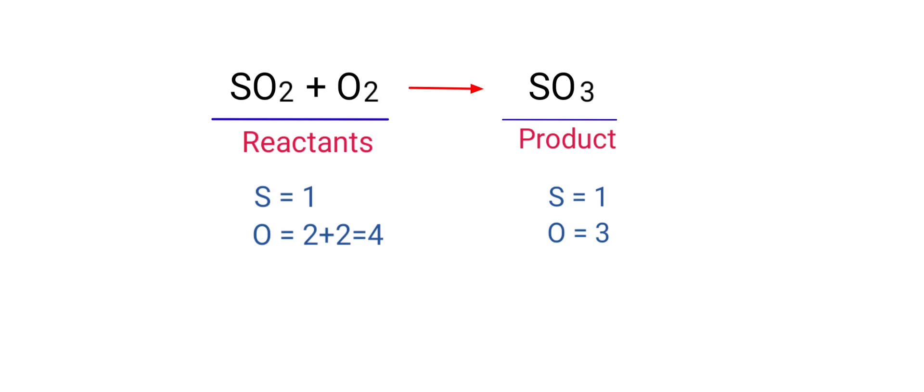If you look at this equation, the equation is not balanced. On the reactants side, there are 1 Sulfur atom and 4 Oxygen atoms present, and on the products side, there are 1 Sulfur atom and 3 Oxygen atoms present. The number of atoms are not balanced on both sides.